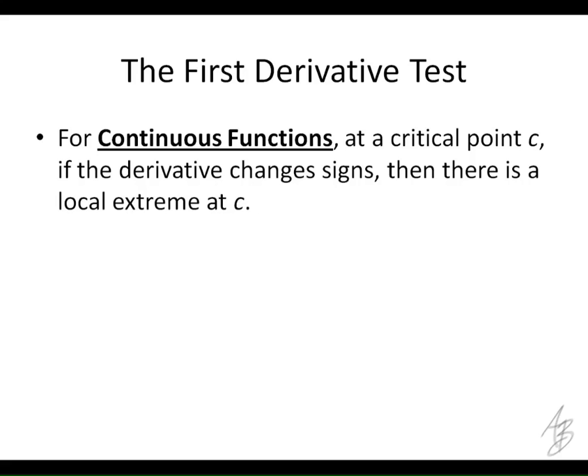So, how do we know which one's which? How do we know when it's going to be a minimum, and how do we know when it's going to be a maximum? At this critical point, if the derivative of the function changes signs — let's say the derivative here at c is changing from positive to negative — why would it be a maximum? Because it's going up and then down — increasing and then decreasing.